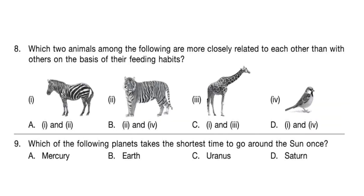Question 8: Which two animals among the following are more closely related to each other than with others, on the basis of their feeding habits? The answer is option C — animals 1 and 3, that is zebra and giraffe, as both are herbivores.